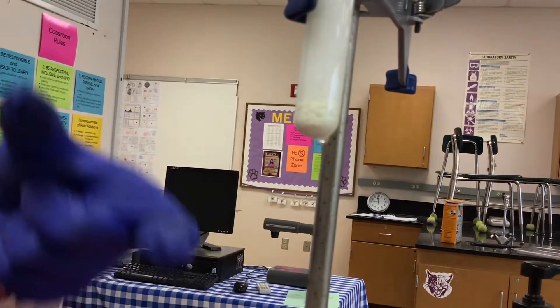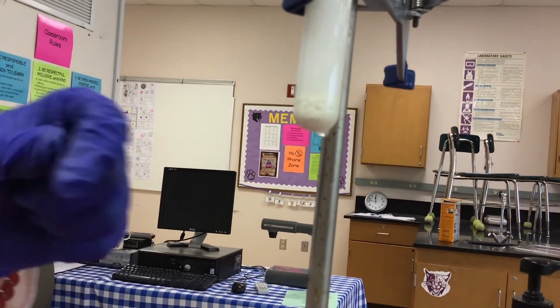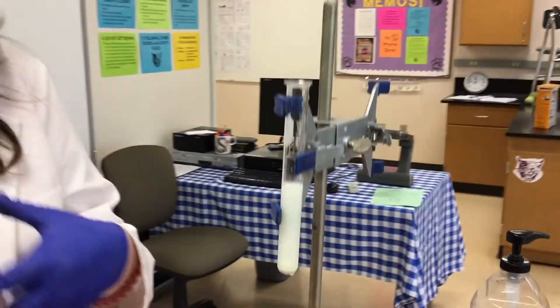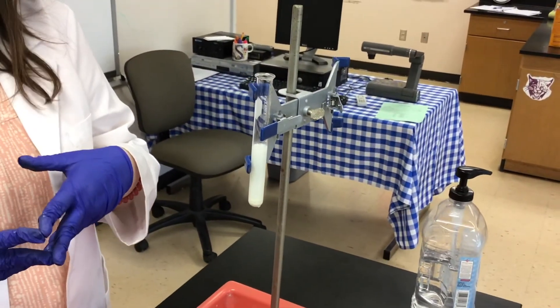That solid that forms is called a precipitate. Some double replacement reactions will form precipitates, which are essentially just ionic compounds that form a solid in our reaction.